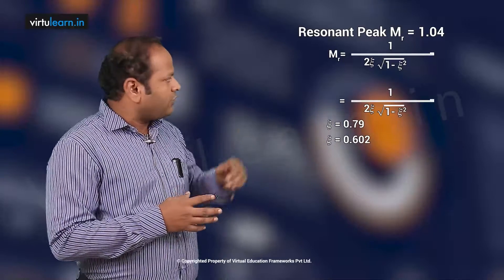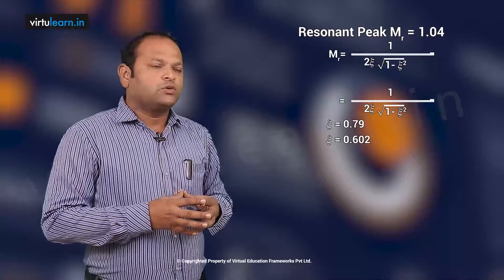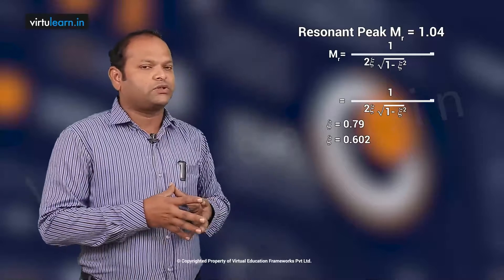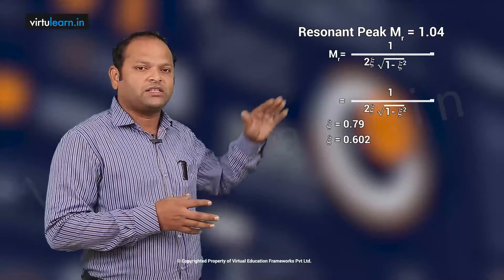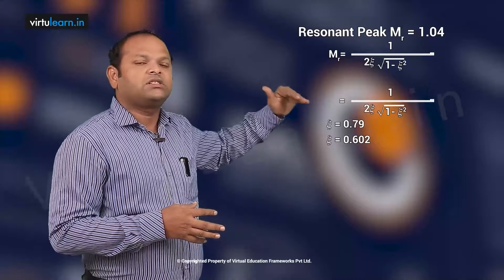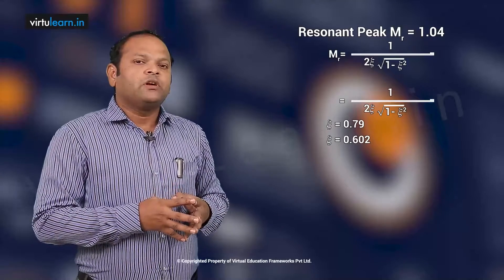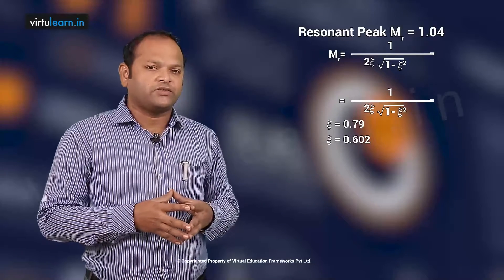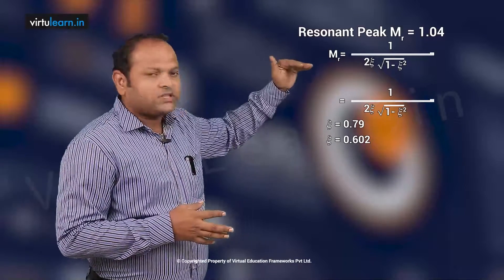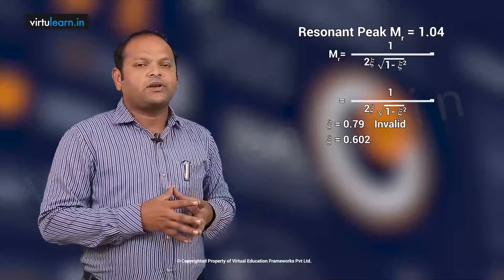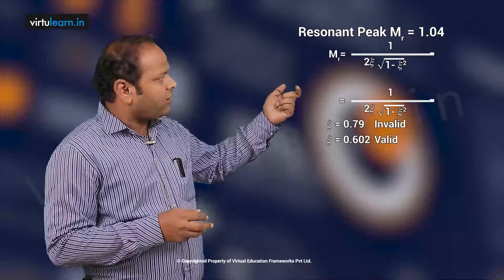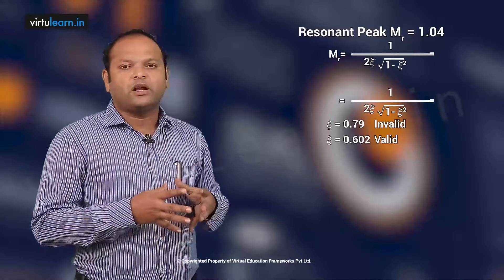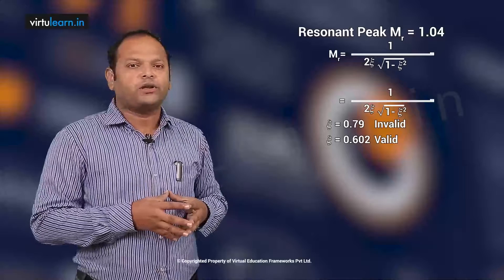For ζ = 0.79, substituting back into the Mr formula shows that Mr does not exist, because the maximum allowable ζ for Mr to exist is 0.707. Therefore 0.79 is an invalid value, and ζ = 0.602 is the valid damping ratio that satisfies the given frequency domain specification.